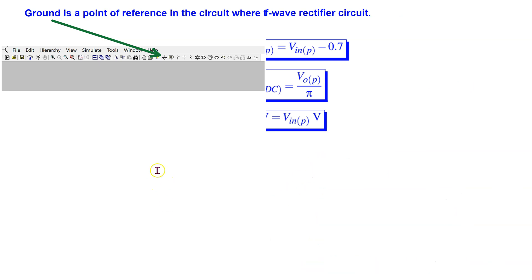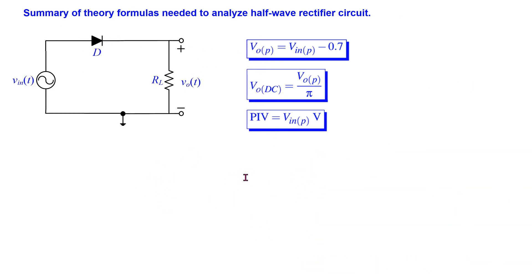This slide summarizes the theory formulas needed to analyze a half-wave rectifier circuit, which can be obtained from any standard textbook on diodes. VOP is the peak output voltage, equal to the peak input voltage minus the 0.7 volt diode drop. PIV is the peak inverse voltage across the diode, equal to the peak input voltage. The peak output voltage can be used to calculate the average DC value of the half-wave rectified waveform. From LTSPICE, we can simulate and obtain V output peak and peak inverse voltage across the diode.